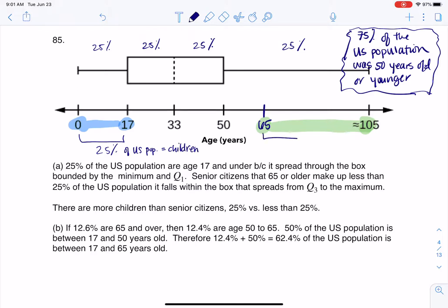Now, in terms of senior citizens, if we look at this, we don't have any hard markers here. Because 65, again, it wasn't in our x-axis. But I do want to look at 50 to 105. We know that this was 25% of our data. So we could say that less than 25% of the U.S. population is senior citizens. So when the question asks which group has more folks in it, well, there's more children than senior citizens because 25% of our population is children and less than 25% of the population is senior citizens.